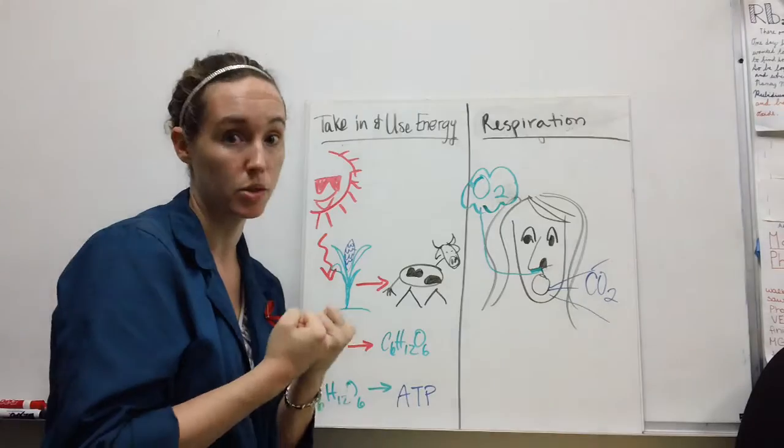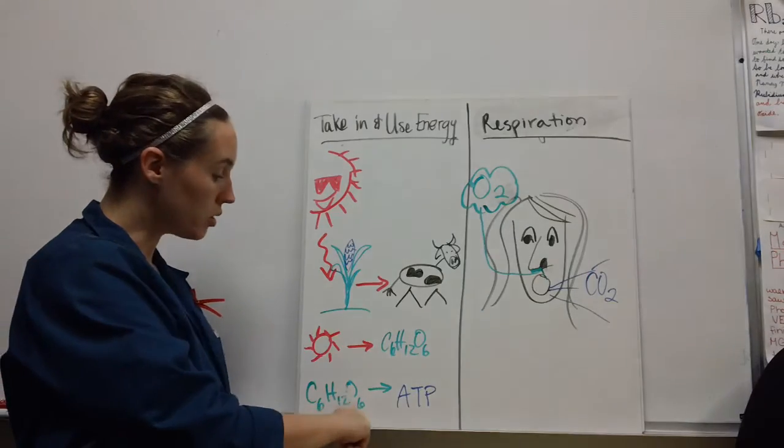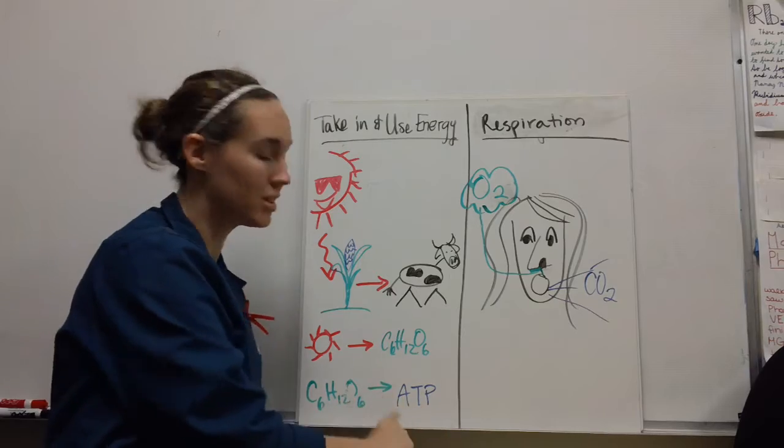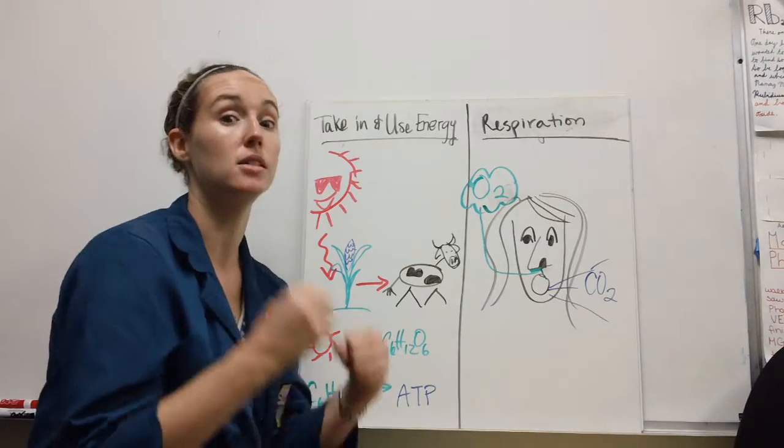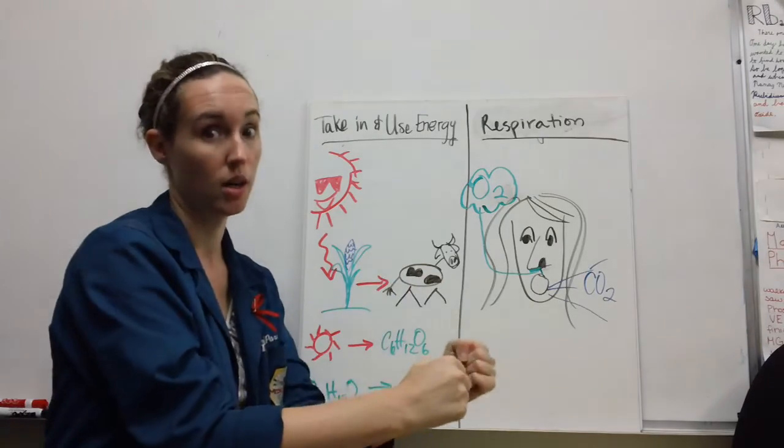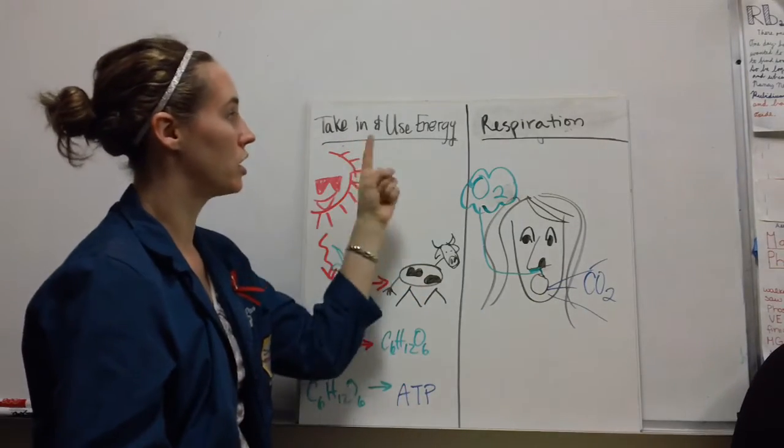All living things take the glucose they either make, consume, or absorb from decomposition and transform it into a molecule called ATP. ATP is the energy molecule that helps living things do work.